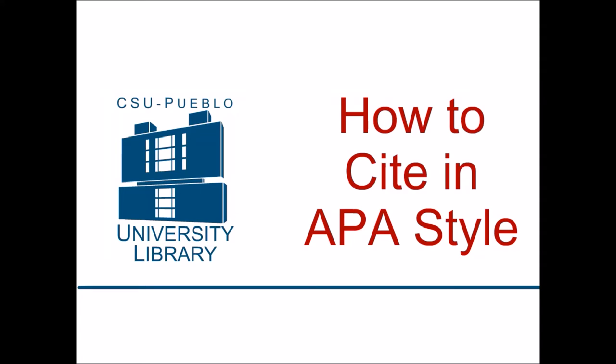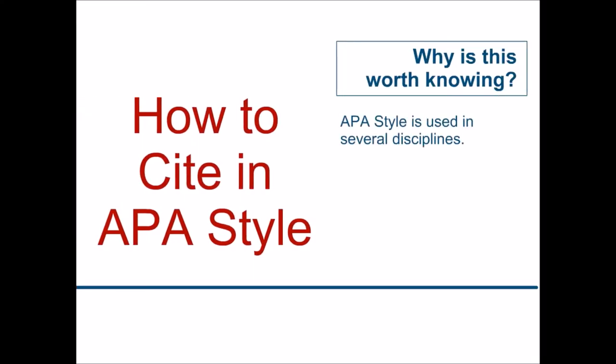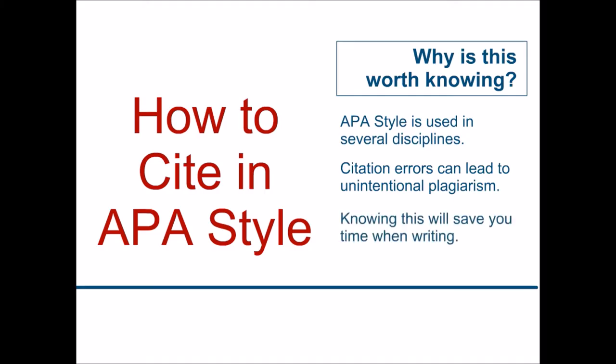This is the CSU Pueblo University Library Quick Class on how to cite in APA style. So why is this worth knowing? Well, APA is a very common citation style that's used in several disciplines. If you use the style incorrectly, however, it can lead to unintentional plagiarism. And although it can be confusing, once you know how to cite in APA, it'll save you time when you're writing.